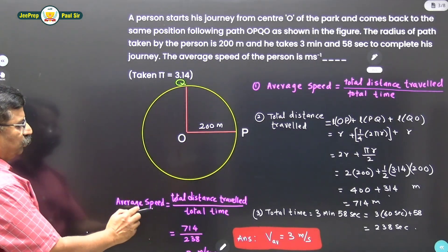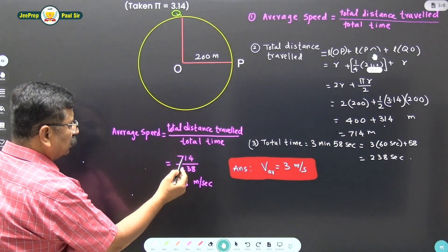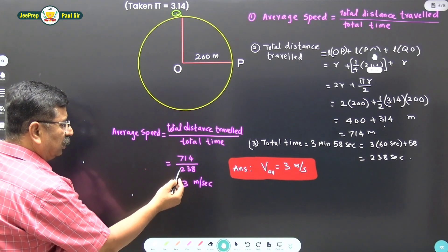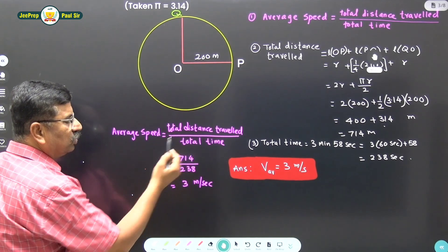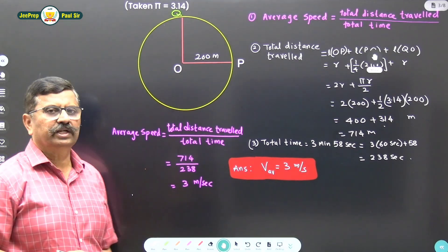Therefore average speed is equal to total distance traveled divided by total time taken. Total distance traveled is 714 divided by 238, that is the total time taken 238 seconds. So this comes to be 3 meter per second.